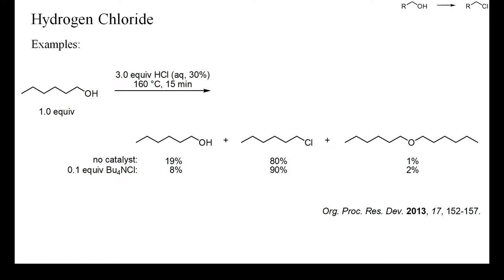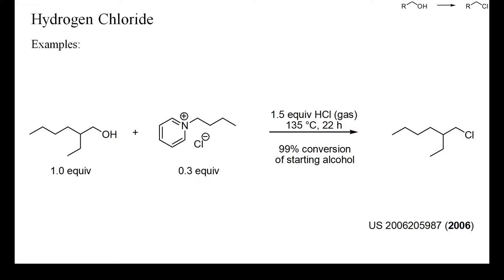This is a further optimized example of the use of an ammonium chloride to facilitate the deoxychlorination of alcohols by HCl. Again, as in the previous example, a high temperature was required, but a clean conversion to the desired chloride occurred.